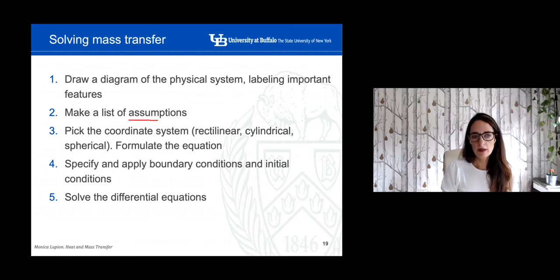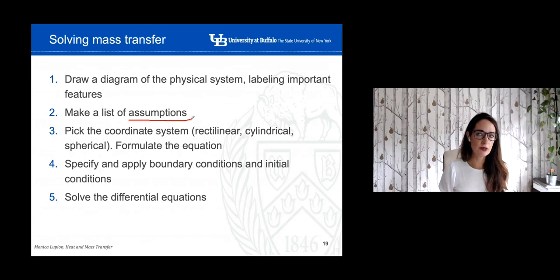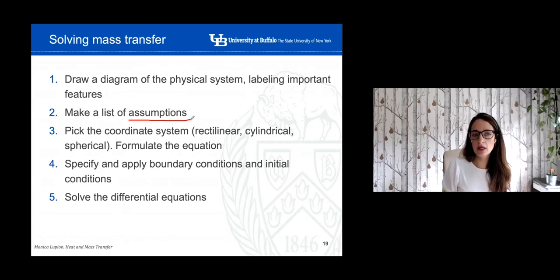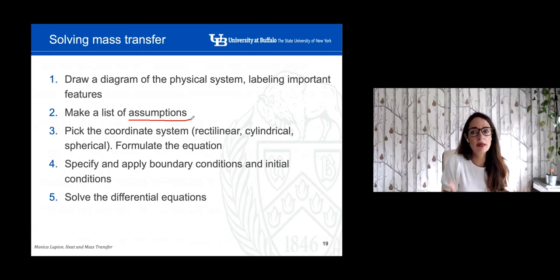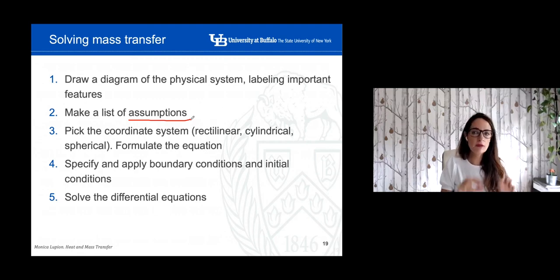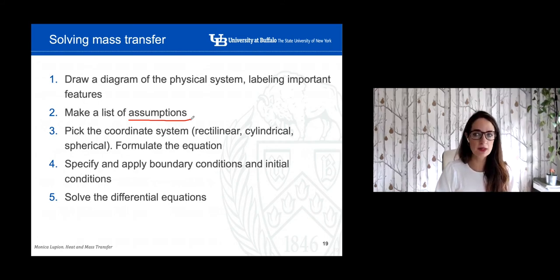Then you need to make a list of different assumptions. For the exam, this is very important. If you just put an equation without any indication of the assumptions, and the equation is not correct, you will get a zero. But if you make the list of assumptions and go from the general to the particular case of the equations, and it's clear that you were taking all the assumptions into consideration — even if you make a mistake with some simplifications — you will still get some points. If you just put your equation without any further explanation, you won't get any points. So it's important to indicate the list of assumptions that you made.